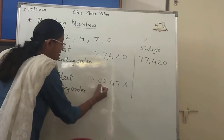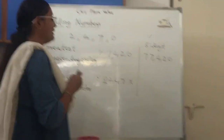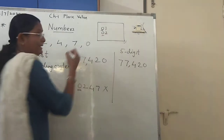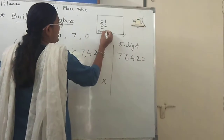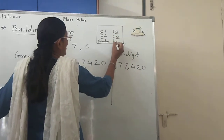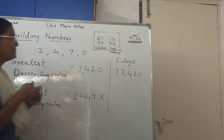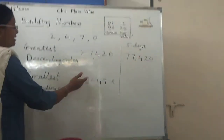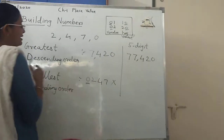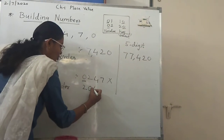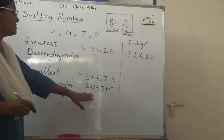You cannot write 0 in front because in maths, when 0 is before any digit, it has no value — like 01 or 02. But when 0 is after the digits, like 10 or 20, it has a value. So for the smallest 4-digit number, after 0 the smallest digit is 2. So we write 2, then 0, then 4, then 7 — giving 2047. This is the correct way to build a 4-digit number using 0.